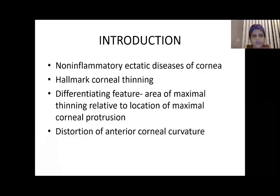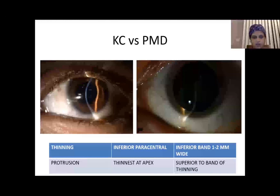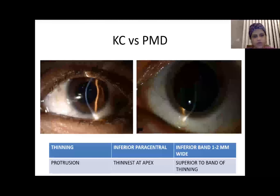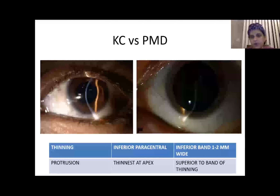The differentiating feature is the area of maximal thinning relative to the location of corneal protrusion. Both present with decreased visual acuity due to distortion of anterior corneal curvature. In keratoconus, the thinning and area of protrusion coincide, whereas in PMD there is an inferior band about 1–2 mm wide above which there is a protrusion — resembling a beer belly configuration.